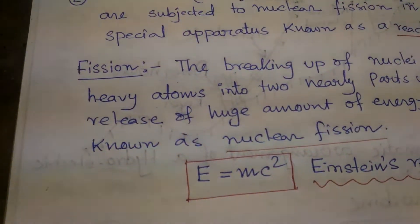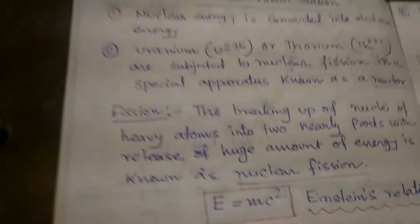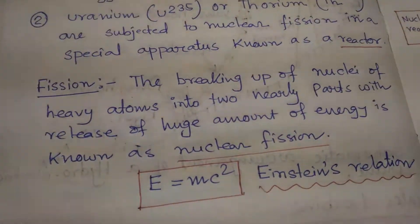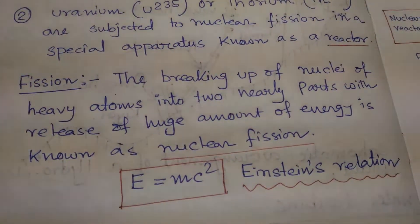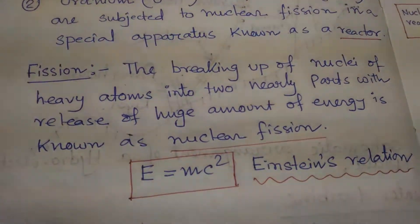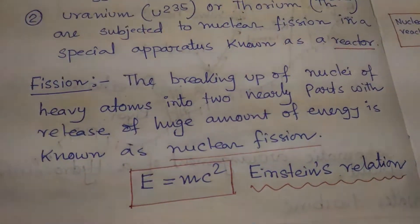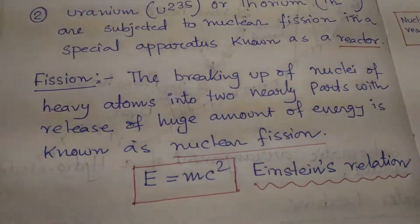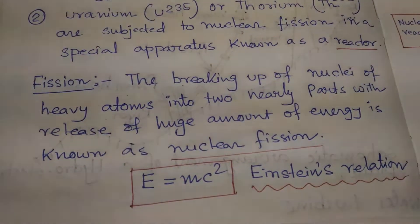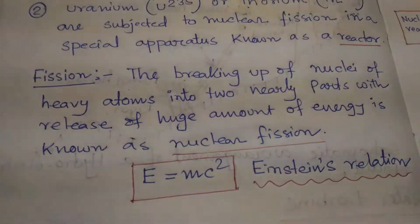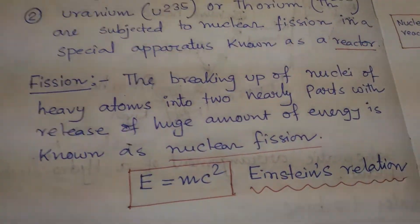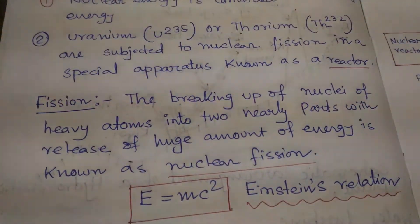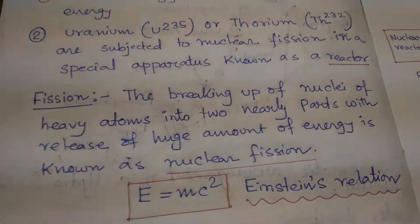The most important feature of the nuclear power station is that a huge amount of electrical energy can be produced from a relatively small amount of nuclear fuel compared to other conventional types of power stations. It has been found that complete fission of 1 kg of uranium can produce as much energy as can be produced by burning 4500 tons of high-graded coal.